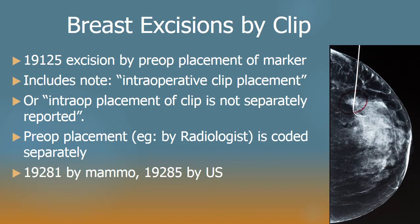Now we come to lumpectomies — breast excisions done by clip or marker. There are two flavors of a lumpectomy: 19125 is excision with a preoperative marker, and there's a separate code for excision without a marker. We have a small change in the descriptor which may clarify the circumstances of when the clip or marker was placed. There are three scenarios: one is intraoperatively, where the surgeon places the marker just prior to cutting out the lump, using mammography, ultrasound, or CT.